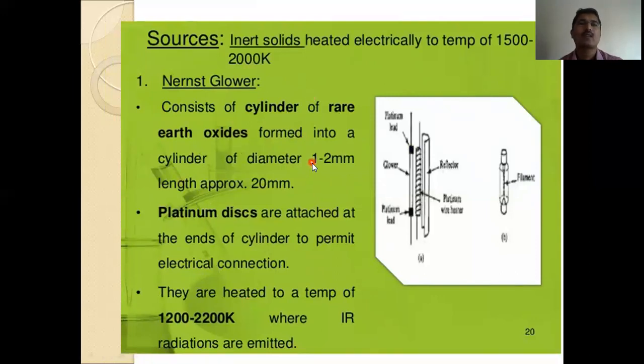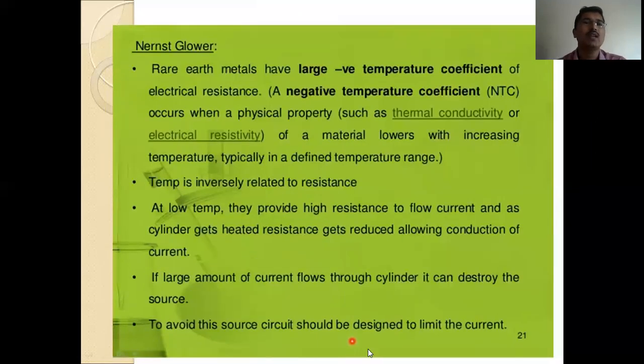Vibration modes. That is the sources. Inert solids heated electrically to temperature of 1500 to 2000 Kelvin. Nernst glower, you can observe here, that consists of a cylinder of rare earth oxides formed into a cylinder of diameter 1 to 2 mm length approximately 20 mm. Platinum discs are attached at the end of the cylinder to permit electrical connections. They are heated to a temperature of 1200 to 2200 Kelvin, where IR radiation are emitted.